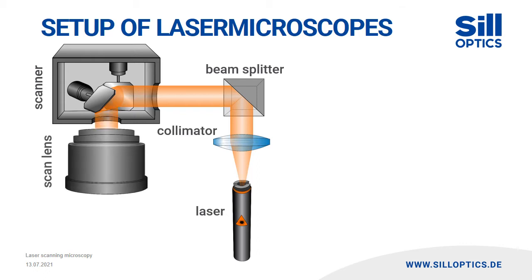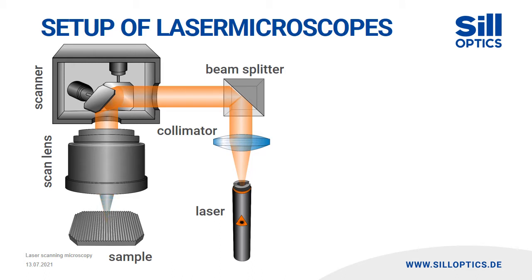The scan lens is able to focus the beam at an even plane on top or inside the sample. The fluorescent light passes through the scan lens and the scanner in the same way as the laser radiation, but it is deflected at the beam splitter.